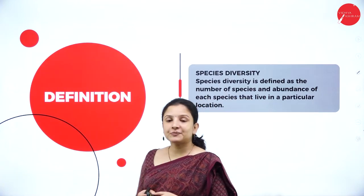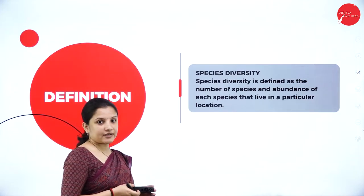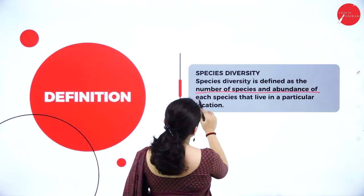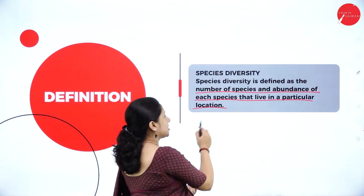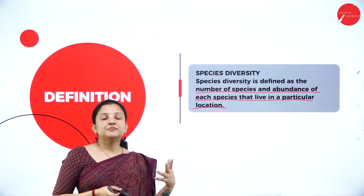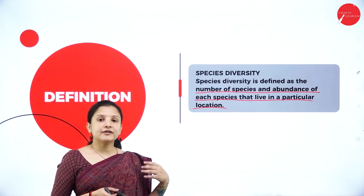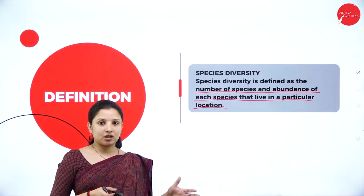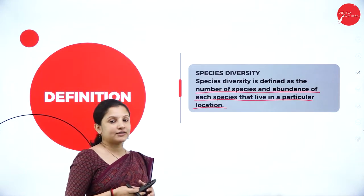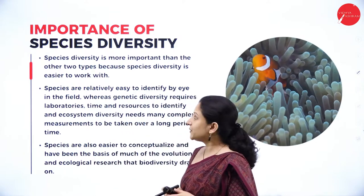Next, talking about species diversity. Species diversity is defined as the number of species and abundance of each of those species that live in a particular location — for example, species of butterfly, tiger, or cat. Different types of species in a particular location, or the differences in species in that location, we call it species diversity.